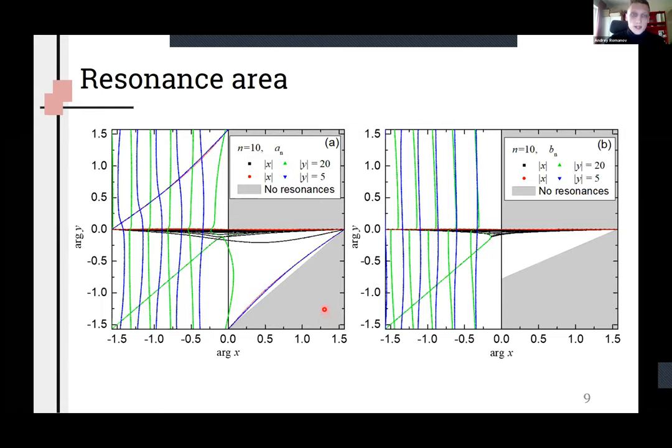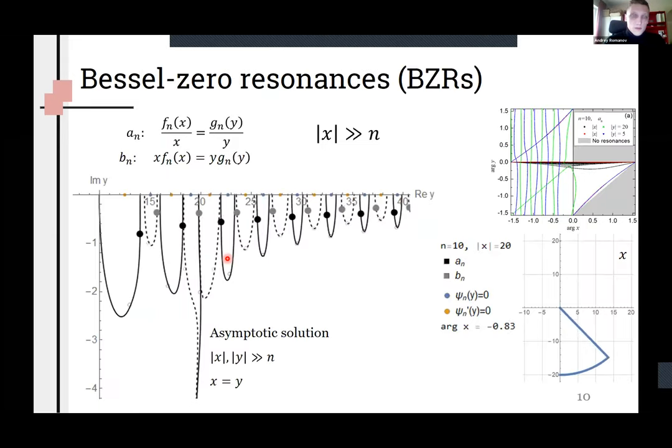Here on the slide you can see all found resonances for different parameter modules. The passive media was considered in theory and gray area denotes approved resonance free zones. Also each color corresponds to a specific type of resonance.